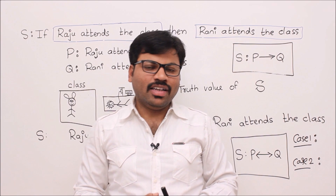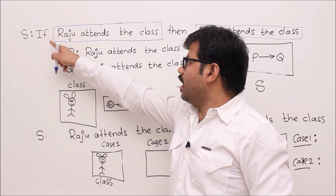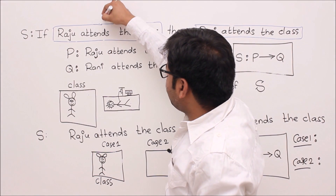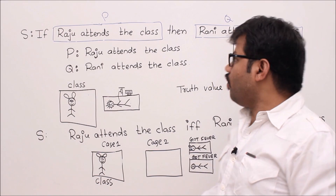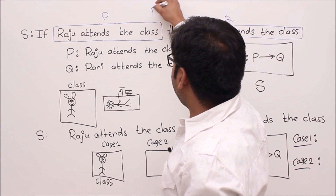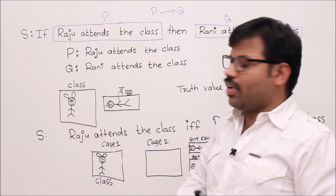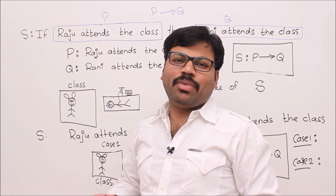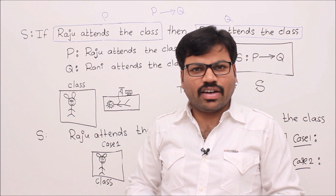Let's see truth values of some compound statements. For example: 'If Raju attends the class, then Rani attends the class.' This is not a simple proposition — it splits into two simple propositions: 'Raju attends the class' (P) and 'Rani attends the class' (Q), combined using 'if P then Q.' This is exactly equivalent to P→Q in propositional logic. Based on the truth values of P and Q, we can calculate the truth value of P→Q.